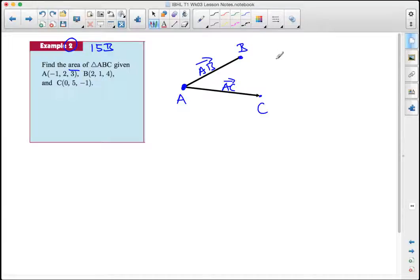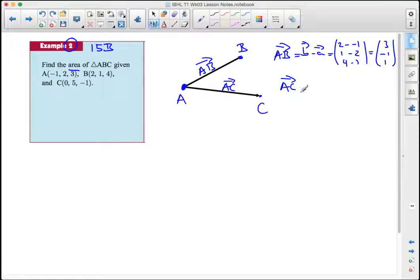And AB is the vector B take A, which is 2 take 1, 1 take 2, 4 take 3. So that's the vector 3, negative 1, 1. Likewise the vector AC is then given to be 1, 3, 4. That's in a similar way.